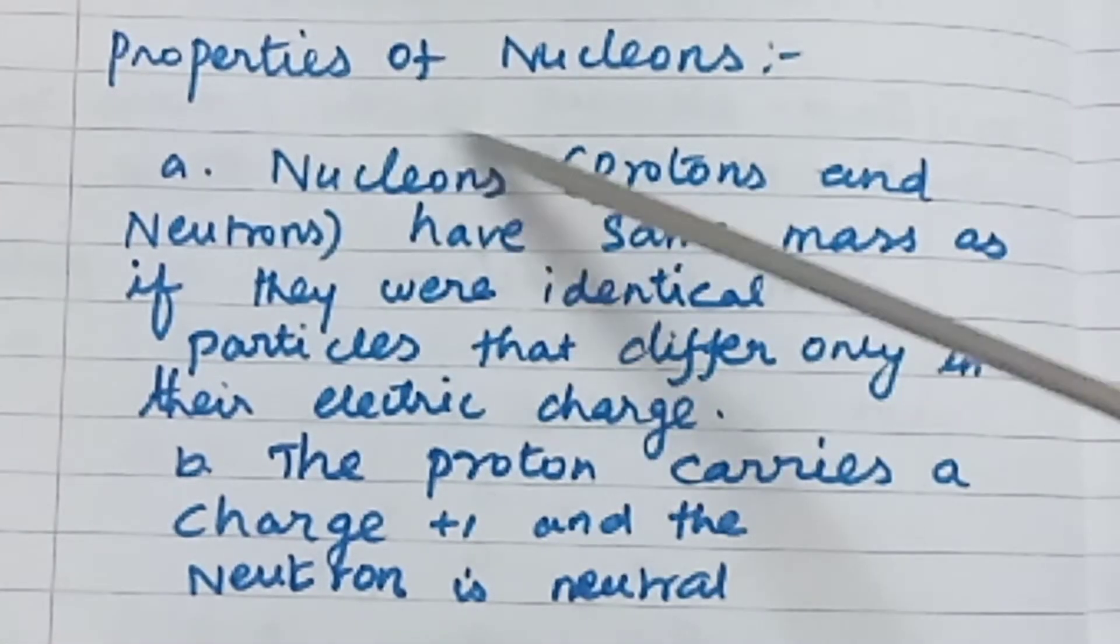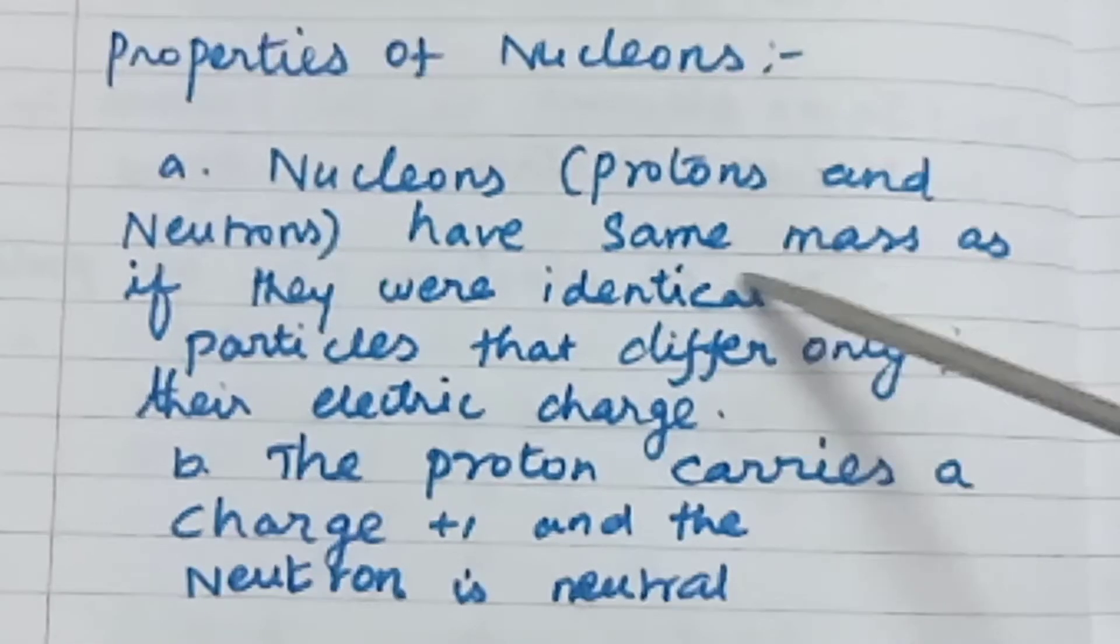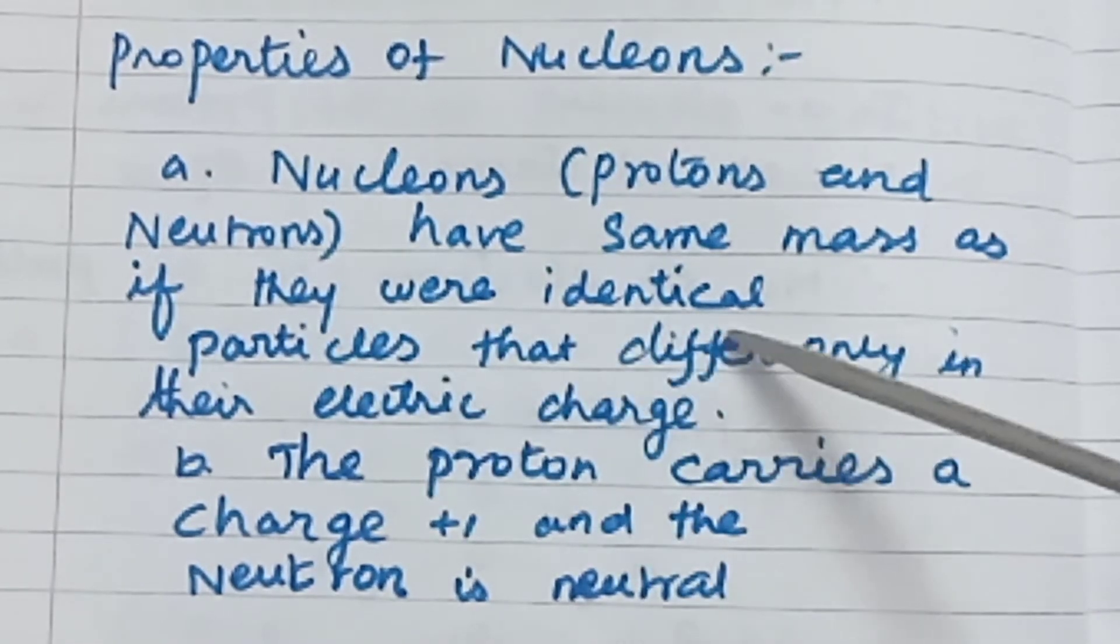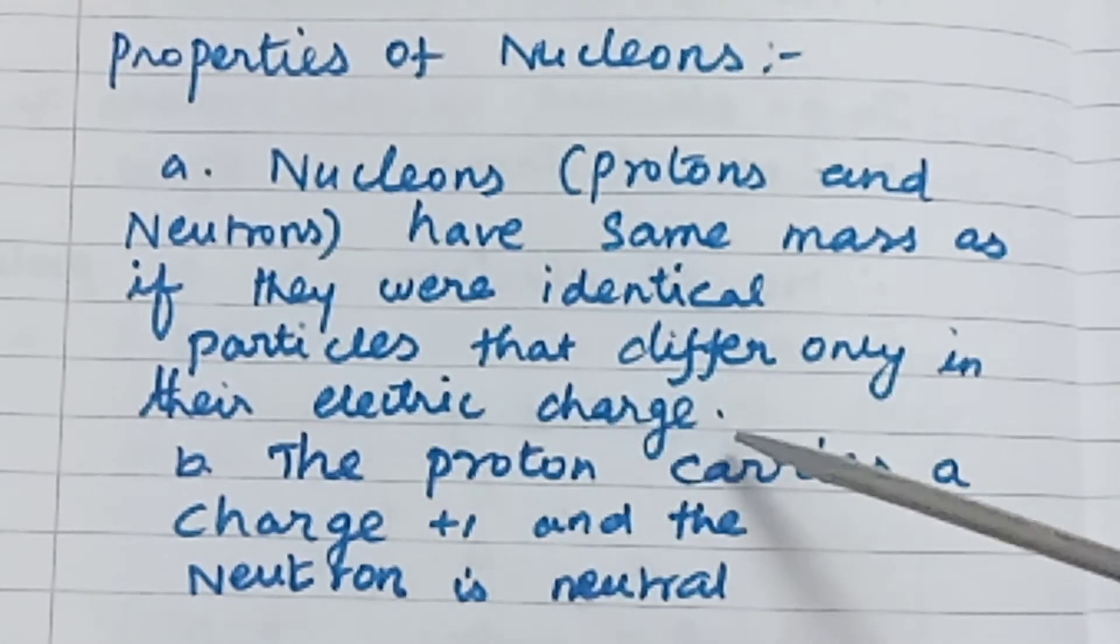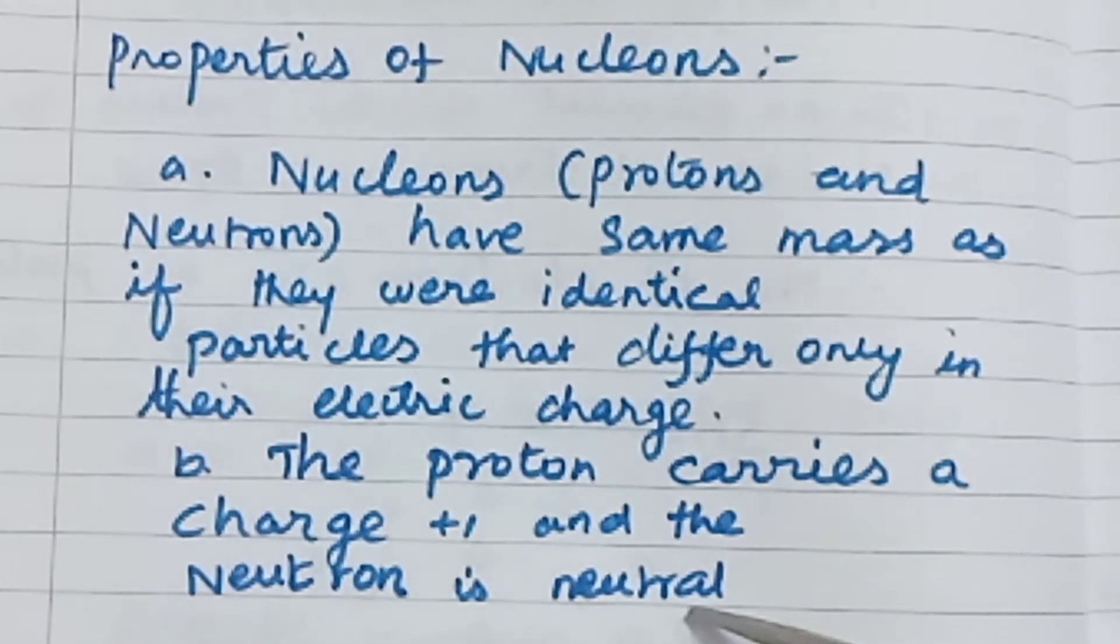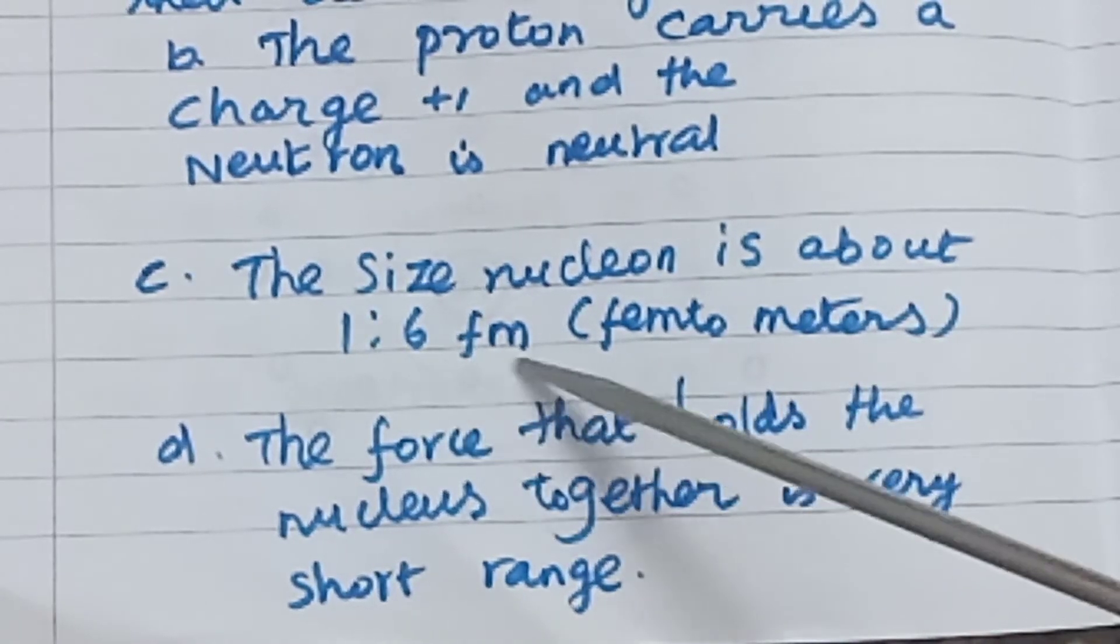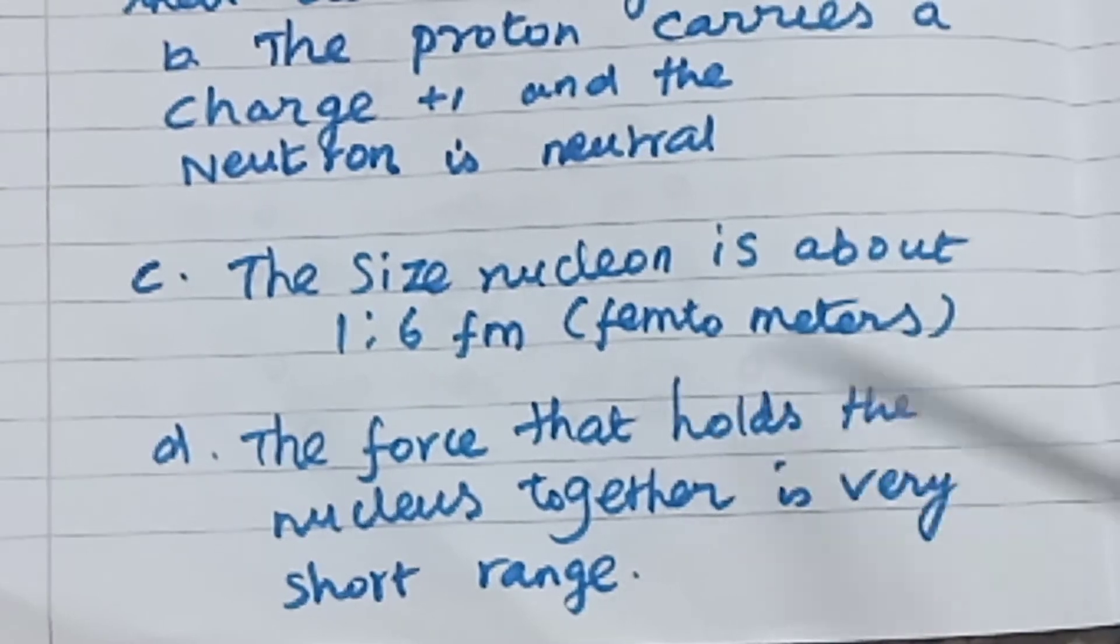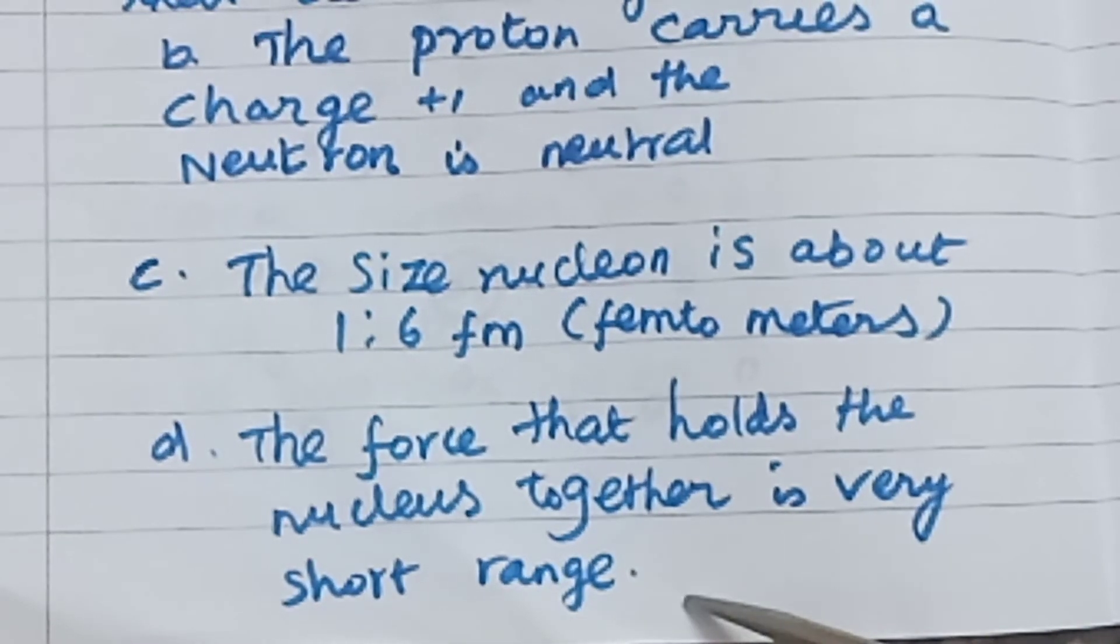Properties of nucleons: Nucleons, protons and neutrons, have same mass as if they are identical particles. They differ only in the electric charge. The proton carries a charge plus one and the neutron is neutral. The size of a nucleon is about 1.6 femtometers. The force that holds the nucleus together is very short range.